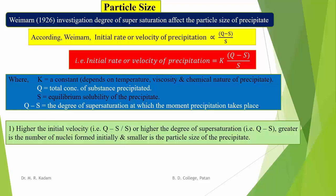Wimmer pointed out that higher the initial velocity of precipitation — that is, higher the degree of supersaturation (Q minus S divided by S) — greater is the number of nuclei formed initially and smaller is the particle size of the resulting precipitate.